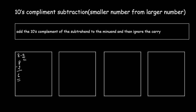First, we need to find the tens complement of the subtrahend, which is 2. To find the tens complement, first find the nines complement by subtracting each digit from 9: 9 minus 2 is 7. Then add 1 to get the tens complement of 2, which is 8.